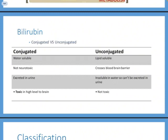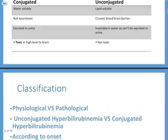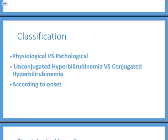We classify jaundice into physiological and pathological. Physiological jaundice is always a diagnosis of exclusion. When a baby presents with significant jaundice, we rule out underlying pathologies — especially if the patient presents in the first 24 hours of life. In newborns, physiological jaundice occurs because the liver is immature: the UDPGT enzyme is not fully active, meaning bilirubin cannot be conjugated efficiently, leading to its accumulation in tissues.